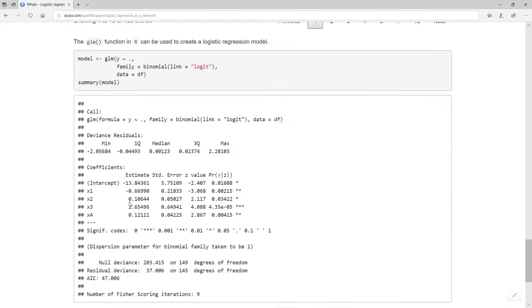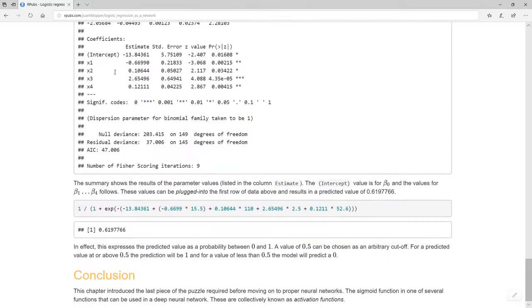As we created it here, this is not a neural network. We've just used plain simple logistic regression, but as you can see, it is absolutely correct. It predicted a one and it really is a one. I think that is the last piece of the puzzle that we require just before we move on to proper neural networks.